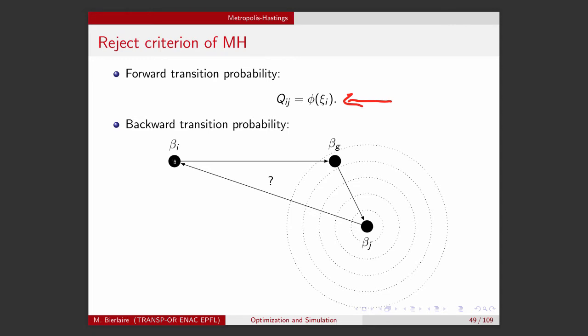But it's not true for the reverse probability. So remember, we started from beta_i, we moved to beta_j, and then we moved to beta_j.